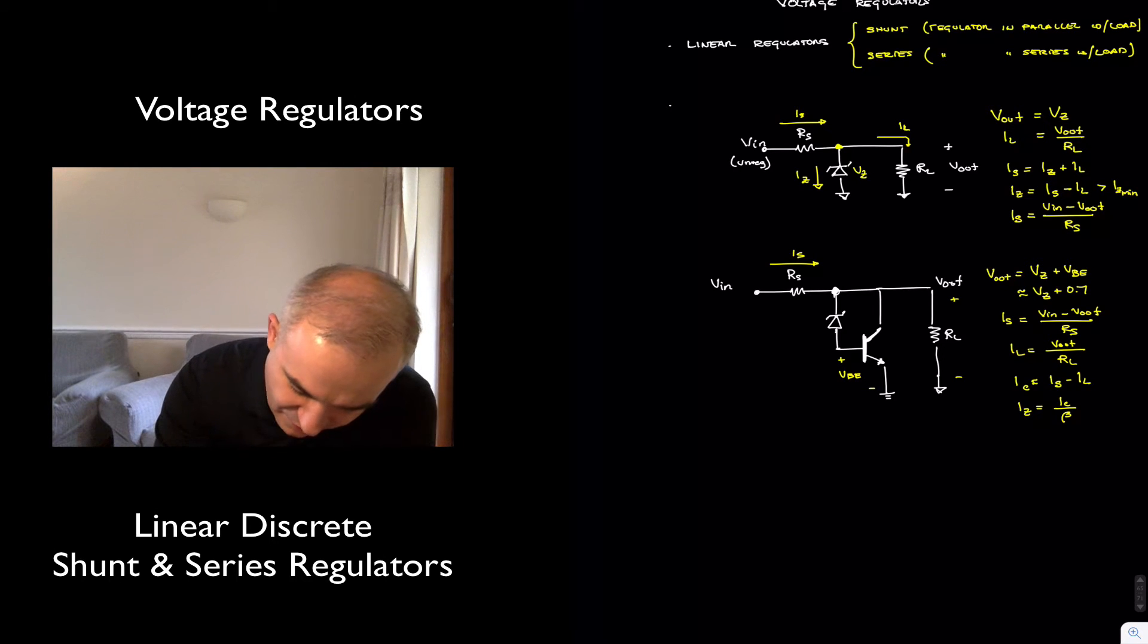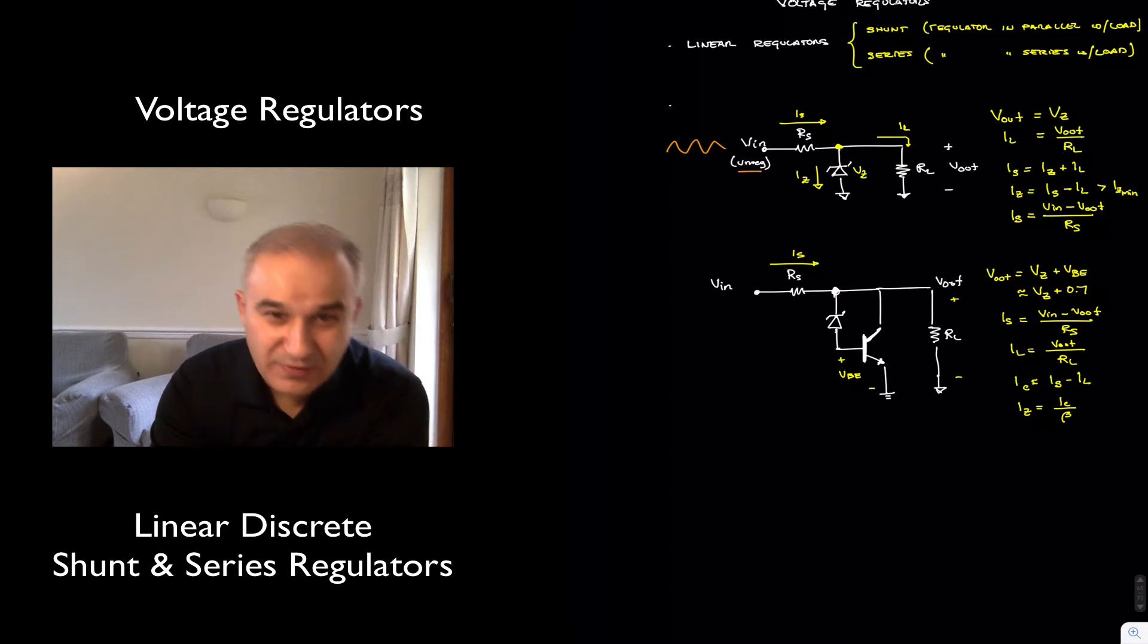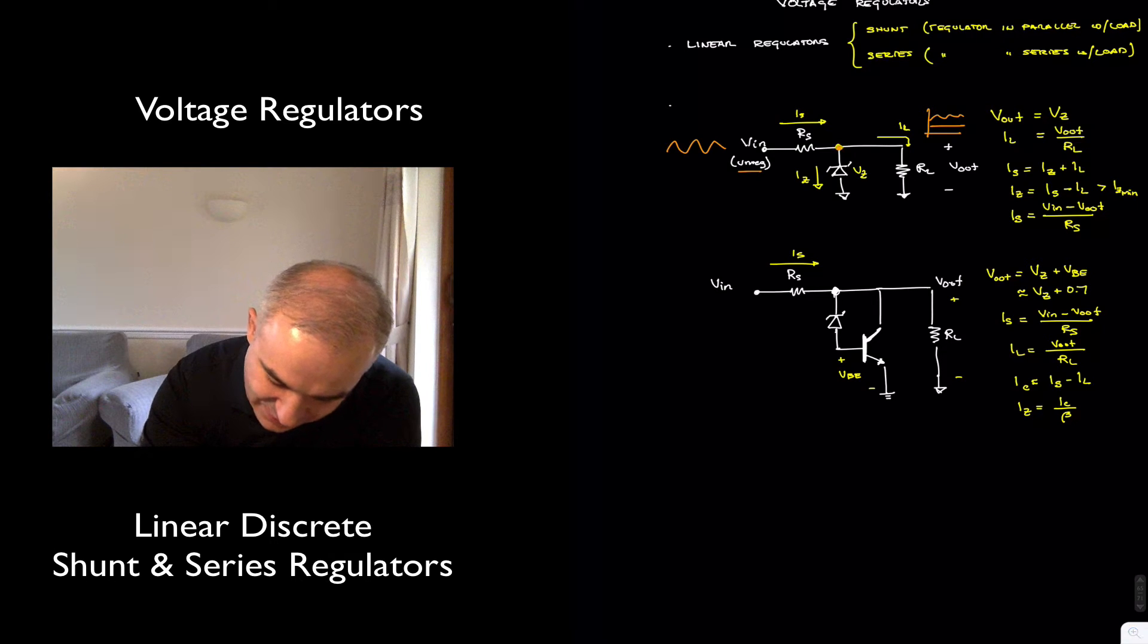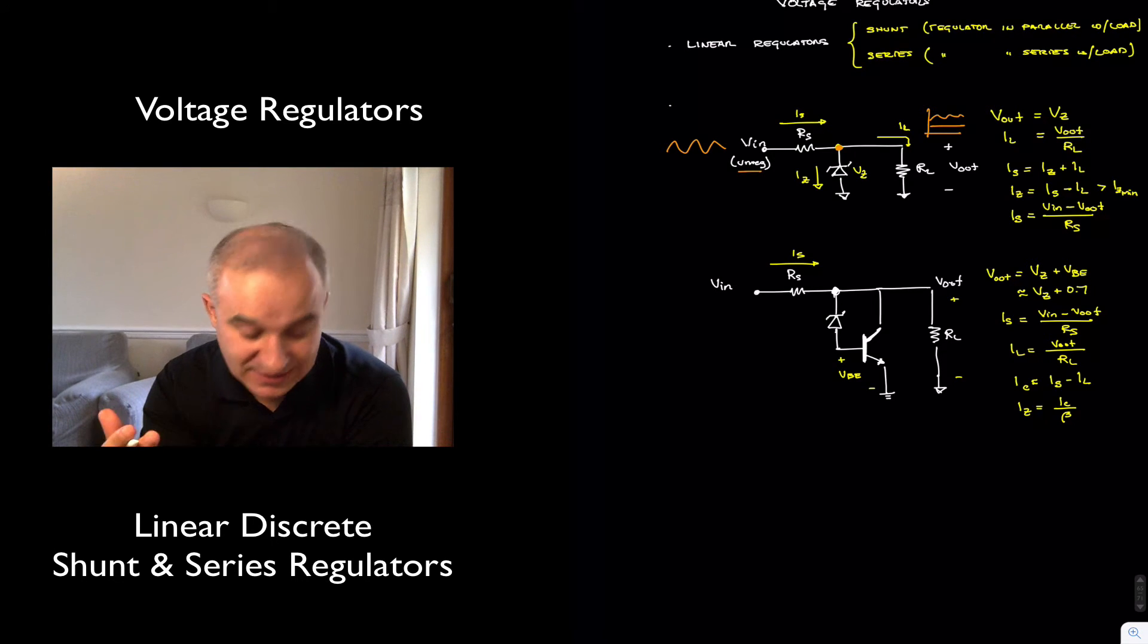You have an unregulated input, and we are trying to create a regulated output. By placing the Zener, which is a regulating device in this case, in parallel shunt with the load.